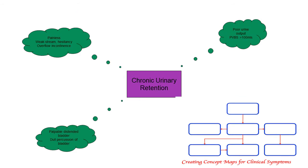To start with, I wanted to differentiate between retention and anuria. Anuria is when you're not actually producing any urine — your kidneys are not producing urine to go into the bladder and it's not coming out. Retention is different in that your body is producing urine, but it's not able to come out of your body.